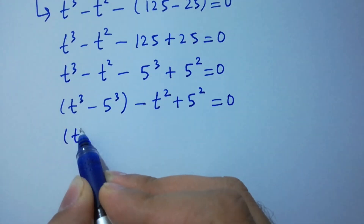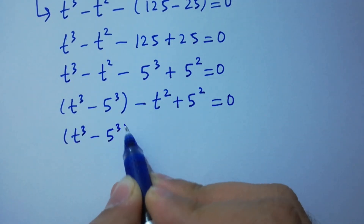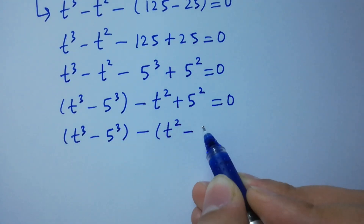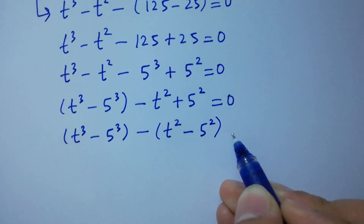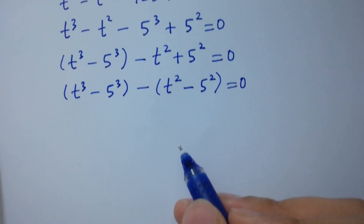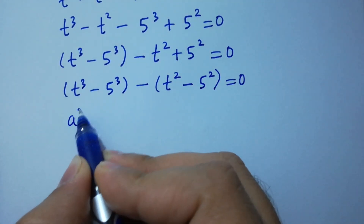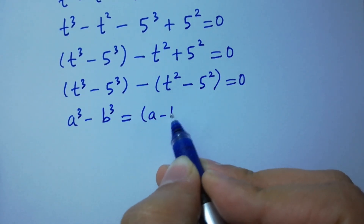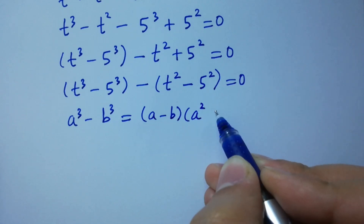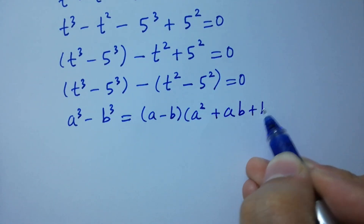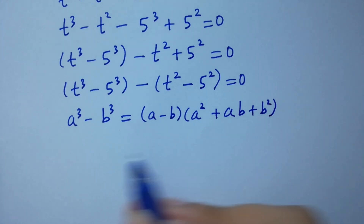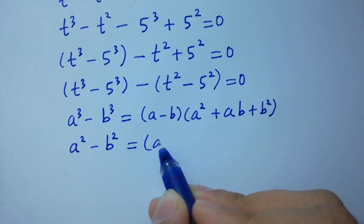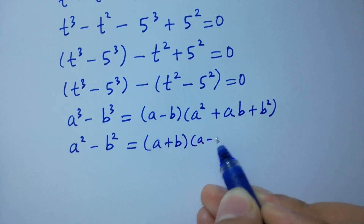Rearranging: t cubed minus 5 cubed minus (t squared minus 5 squared) equals 0. As we know, a cubed minus b cubed equals (a minus b)(a squared plus ab plus b squared), and a squared minus b squared equals (a plus b)(a minus b).